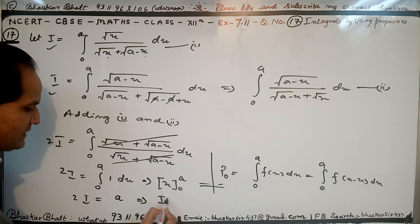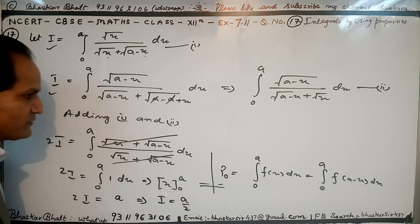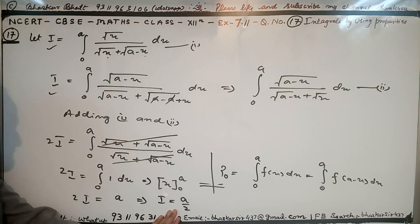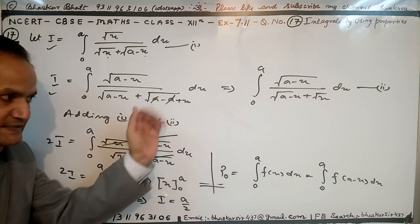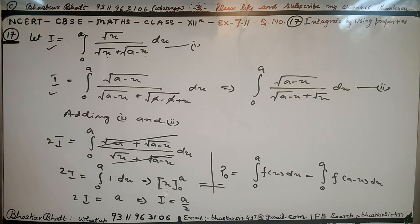That's the required answer: I equals a by 2. This is a very easy question where we can easily use the property P0. Hope you understand very easily.